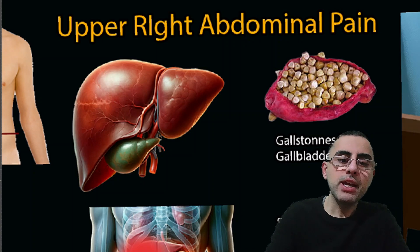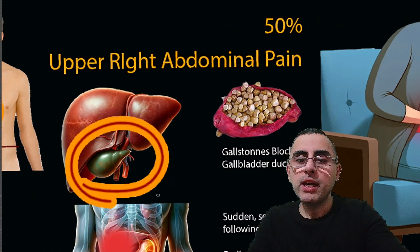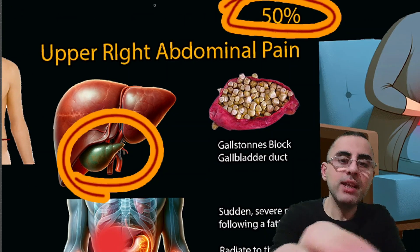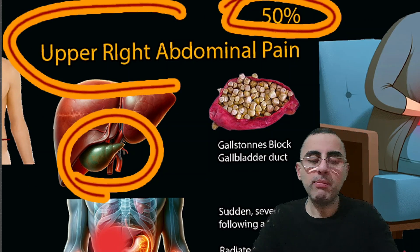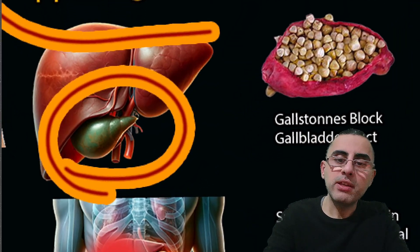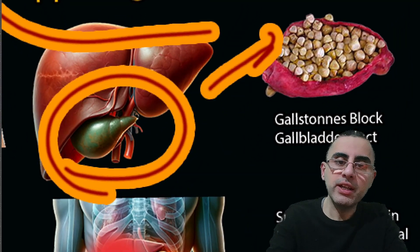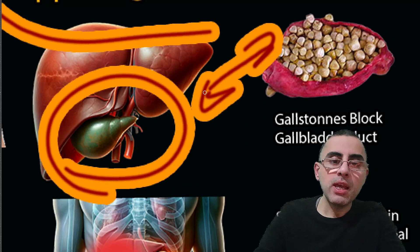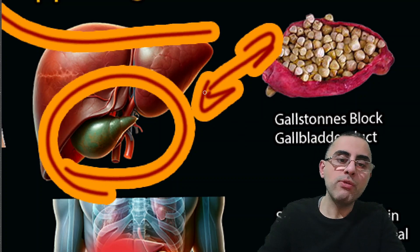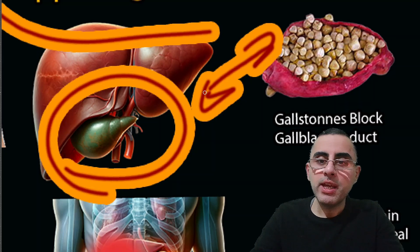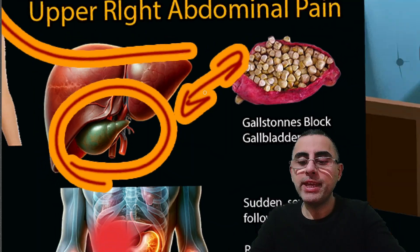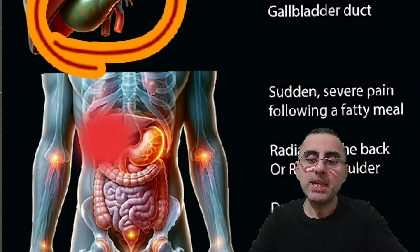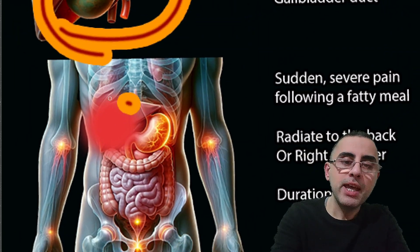When there is more serious pain with a pattern, it is usually caused by gallbladder problems. 50% of cases of upper right abdominal pain are caused by gallbladder problems. When there are gallstones in the gallbladder, they can block the duct and cause painful contraction of the biliary duct, resulting in severe pain.